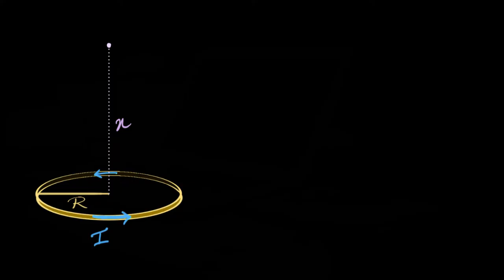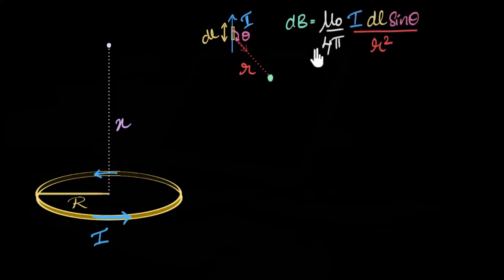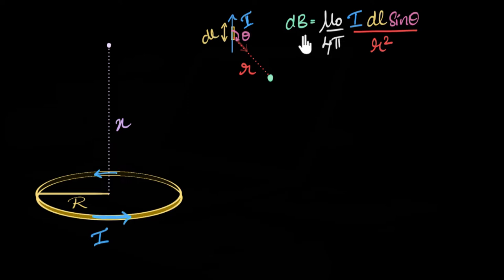So how do we begin? We can start with something we've already seen before. We know the relationship between current and magnetic field given by Biot-Savart's law. It says that if you have a tiny piece of wire of length dl carrying current i, and you want to calculate the magnetic field at some distance r making an angle theta, then that small magnetic field dB equals some constant times the current times dl times sine theta divided by r squared. This is similar to Coulomb's law, which tells you the strength of the electric field due to a charge — this one tells you the magnetic field due to a current-carrying small element.